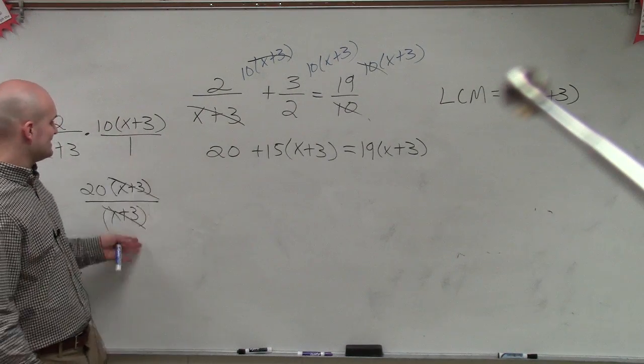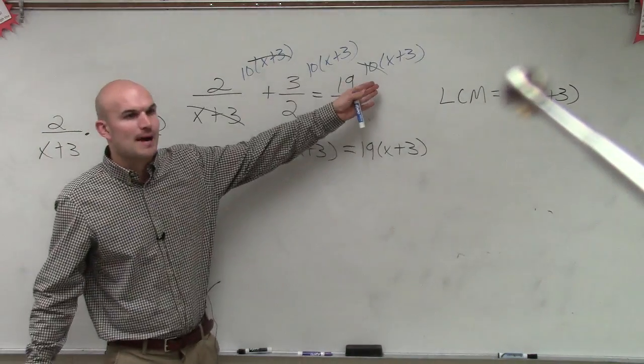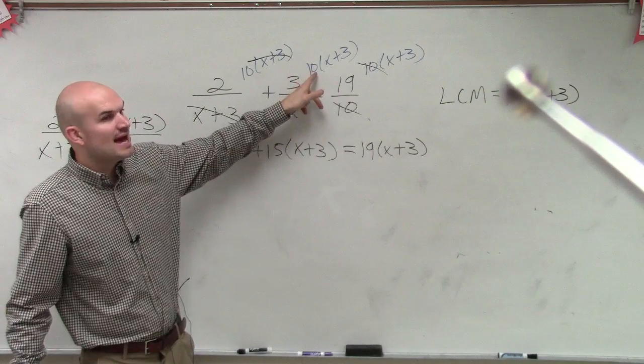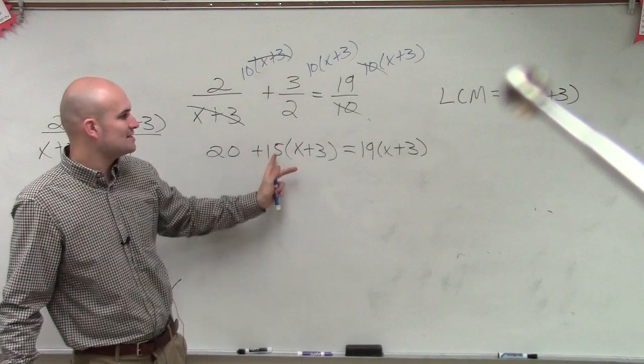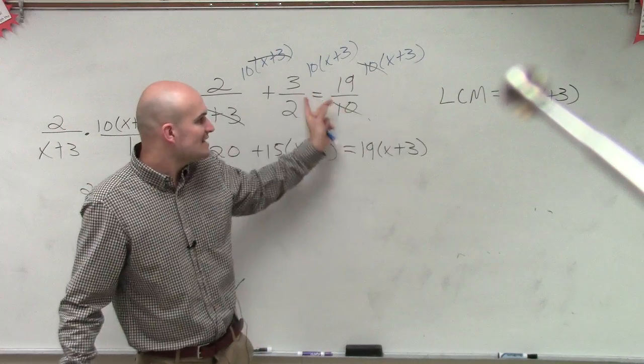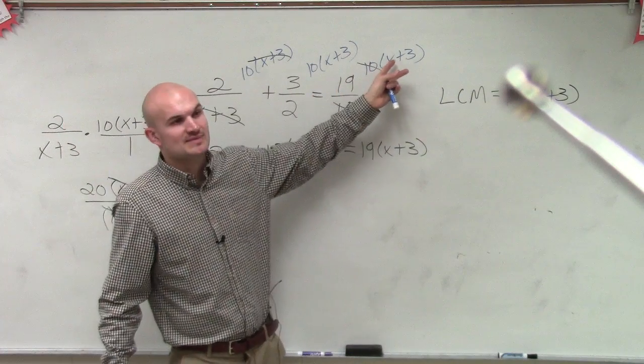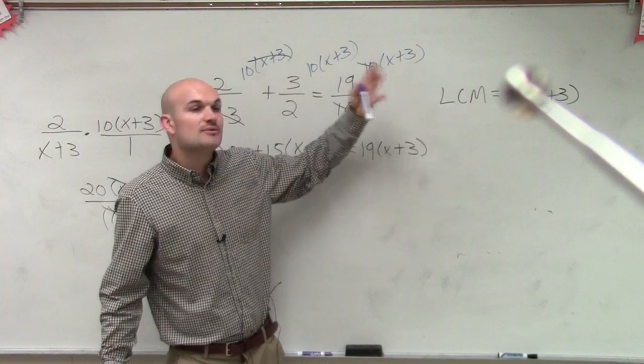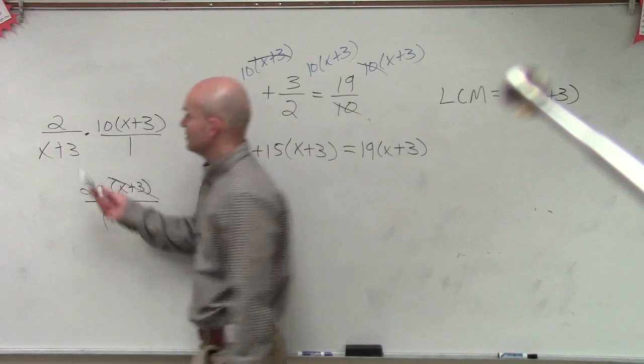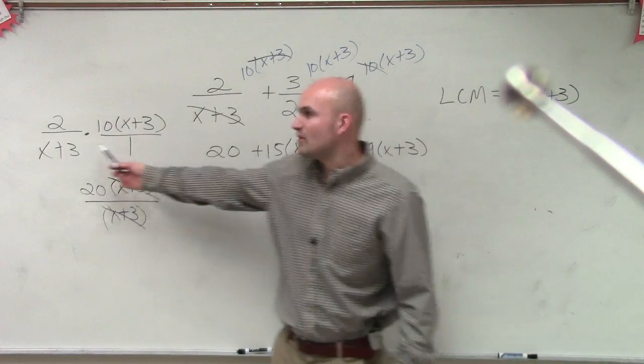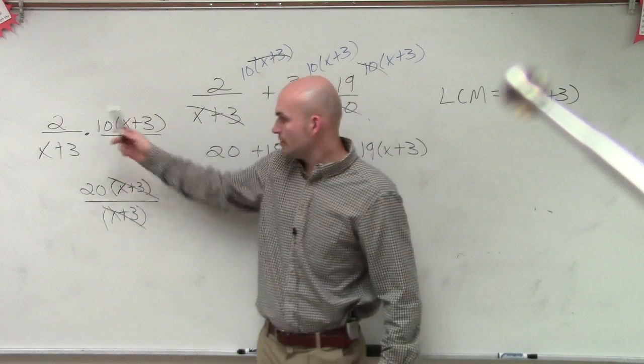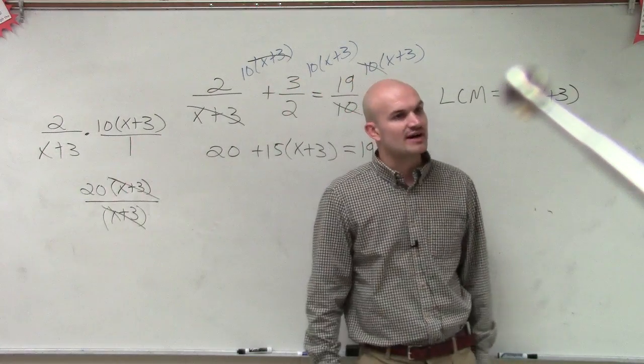So it just equals 20. If I did that for each one of these problems, for each one of those values, you'll see what I get. Here, 3 times 10 is 30, and then divide by 2 is 15. So now it's 15 times x plus 3. Here, the 10s just divide out. So I'm just left with 19 times x plus 3. The best thing, if you're having trouble with it, just write it all out like I did over here. If you're not seeing how to get those problems, just write it out. You're multiplying 2 times x plus 3 times the LCM. And then what you notice is the x plus 3 is divided to 1.